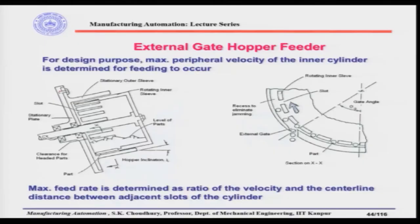We started discussing the external gate hopper feeder. The design is quite simple: we have a stationary plate, on which there is a stationary outer sleeve, and within that sleeve there is a rotating inner sleeve. This rotates, and in the rotating inner sleeve we have slots. The mass of the parts is at the bottom of the rotary inner sleeve, and while rotating, the parts will be nested in the slots, and when the slots are aligned with the external gate — which is on the stationary outer sleeve — the parts come out.